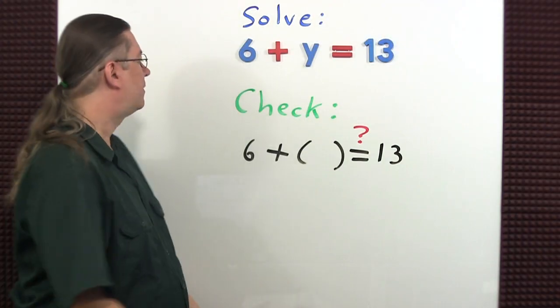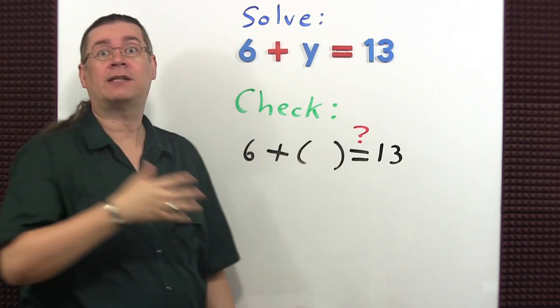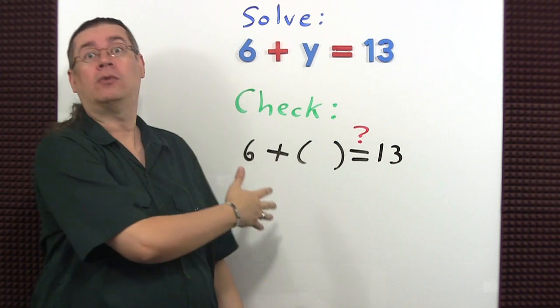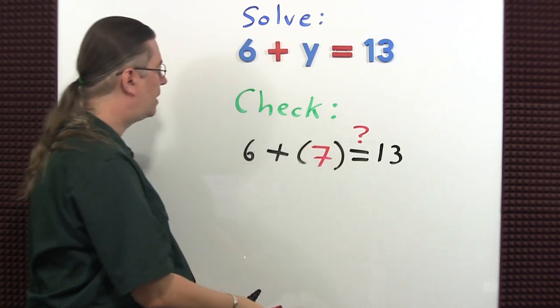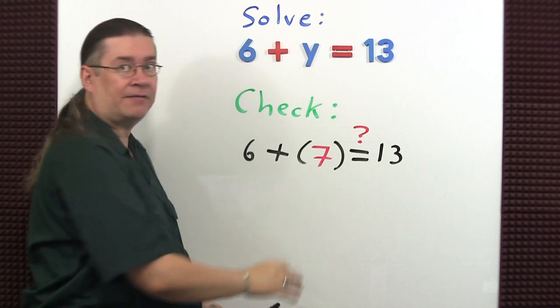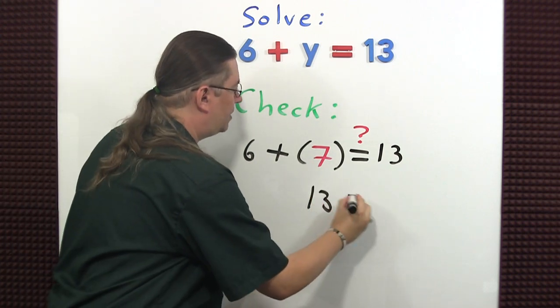Now let's check our solution. Again, we rewrite the equation but in place of the variable we place a set of parentheses. y was equal to 7, so let's put that in here. 6 plus 7 is 13, which is equal to 13. It checks.